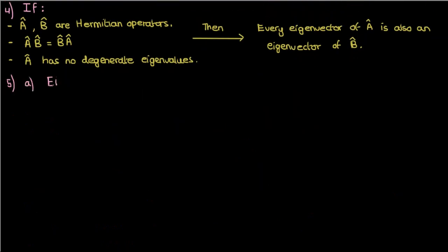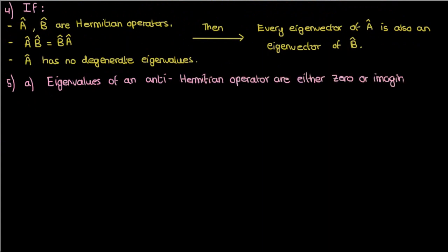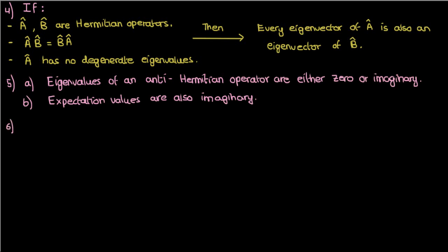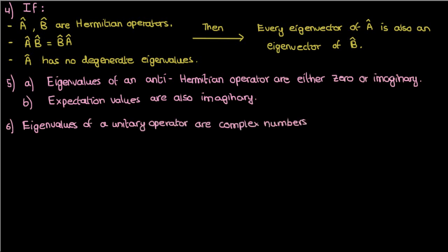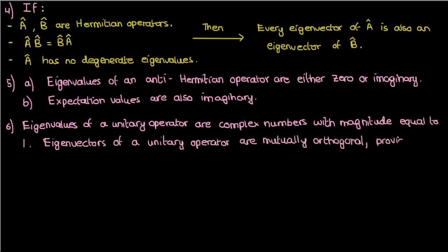Theorem 5 states that the eigenvalues of an anti-Hermitian operator — an operator equal to the negative of its Hermitian conjugate — are purely imaginary, and so are their expectation values. Theorem 6 states that for a unitary operator, whose Hermitian conjugate equals its inverse, the eigenvalues are complex numbers with a magnitude of 1 — and that's why it's called unitary. The eigenvectors are also orthogonal to each other as long as the unitary operator doesn't have any degenerate eigenvalues.